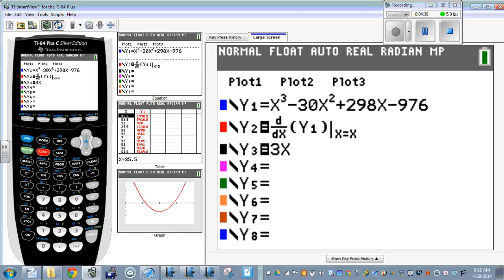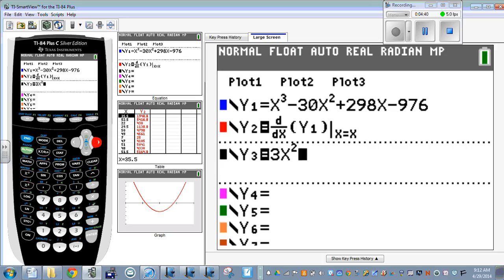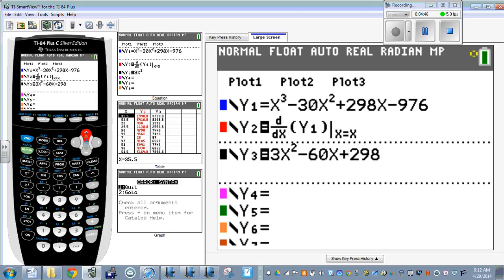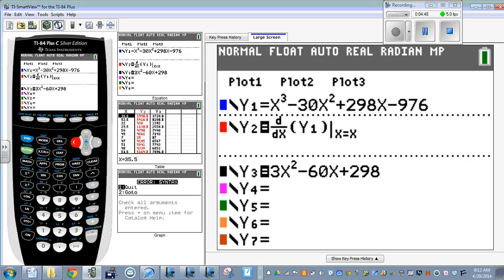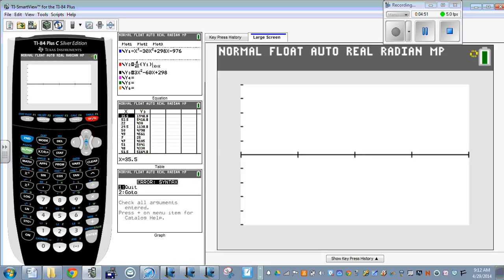3x squared minus 60x plus 298. And then I'm going to go up here and turn this one off. But we should get the same graph here.